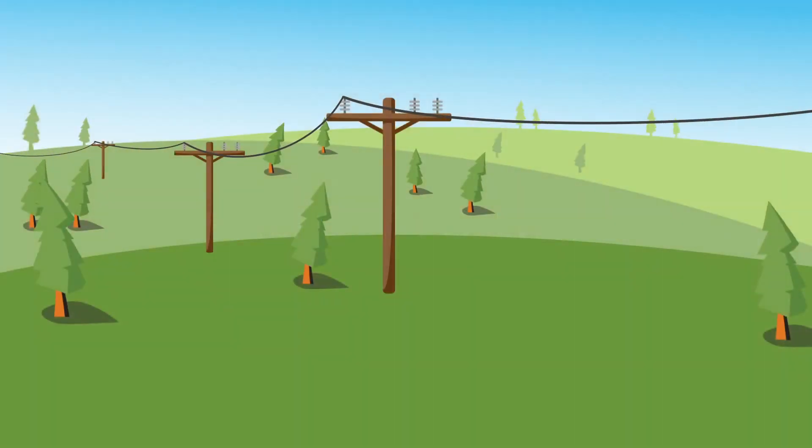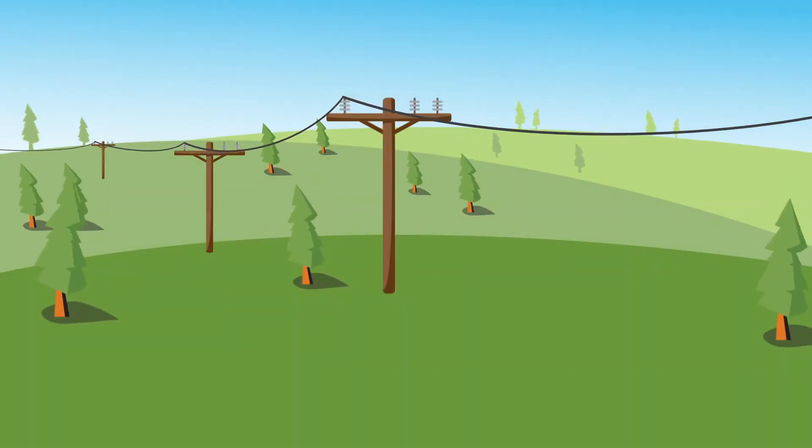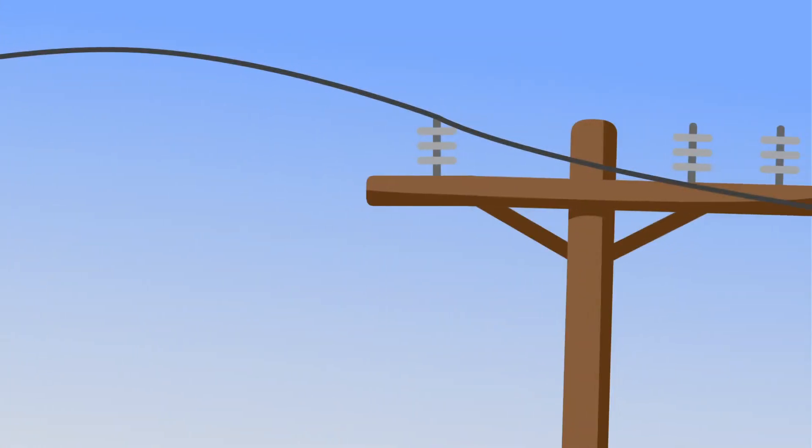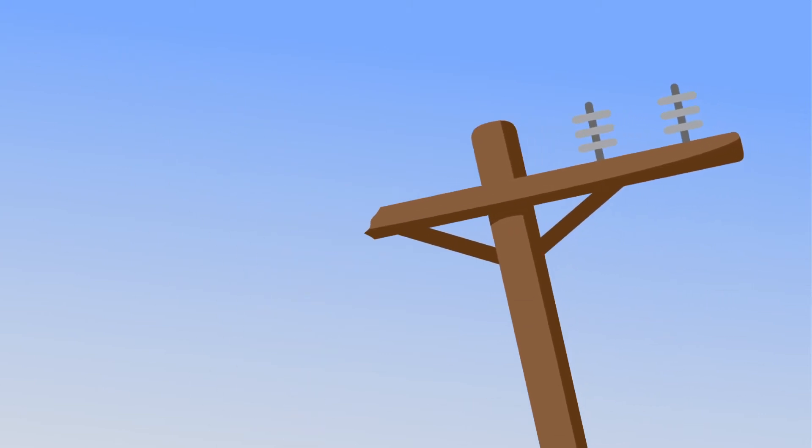When strong winds blow across power lines, they can cause them to lift and bounce, also known as galloping. This puts extra stress on the poles and cross arms, sometimes causing them to break.